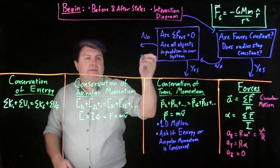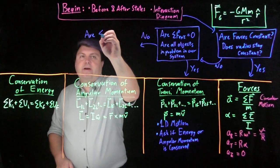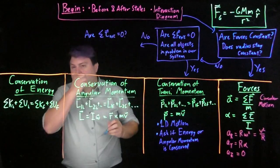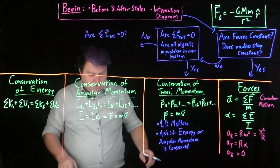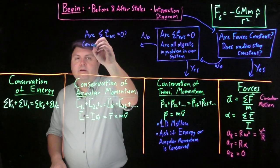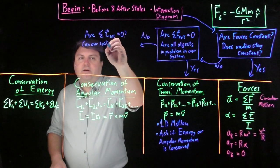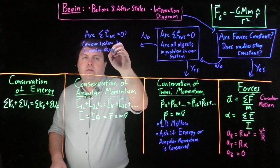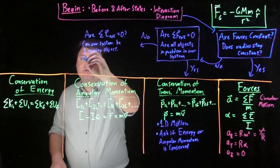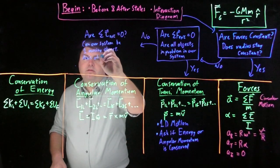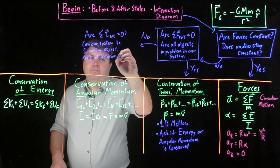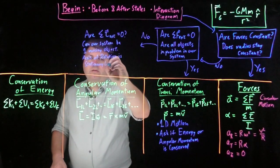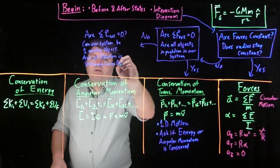And if we say no, we're going to ask a very similar question. Are the sum of the torques external equal to zero? And what we can ask for this is, can our system be one moving object and then our axis of rotation?